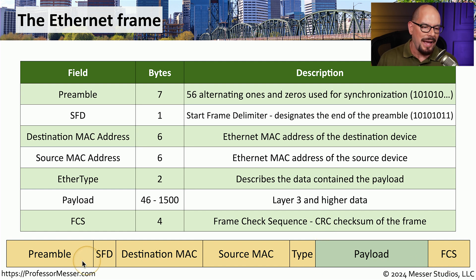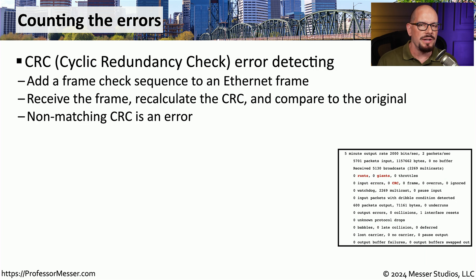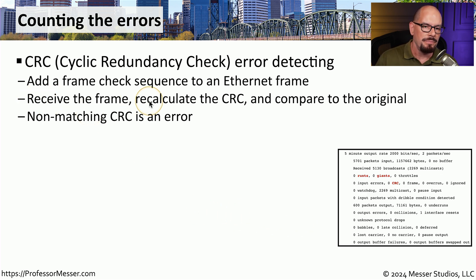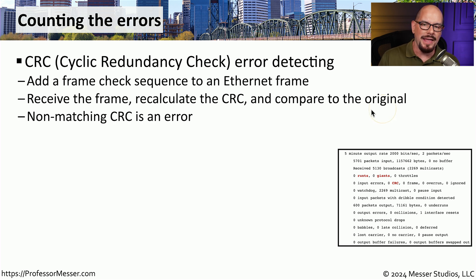When this frame check sequence does not match the rest of the data in the frame, we have a cyclic redundancy check error, or CRC error. The CRC error is often our first warning that there's some type of problem with the signal on this particular connection, and we might want to look at our cable or interfaces to remove those CRC errors. The CRC is recalculated internally on your Ethernet adapter and compared to the checksum included in the frame check sequence. If those two match, the frame was received without corruption. But if there is a mismatch, we know there is an error and the CRC counter is incremented by one.